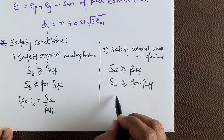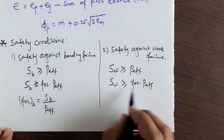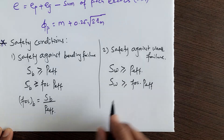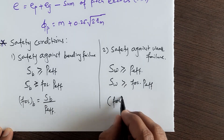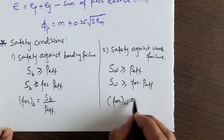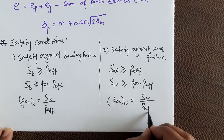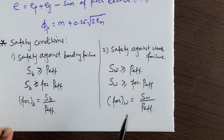If this condition is satisfied, your gear pair is safe; otherwise it is unsafe and you must modify the design. The factor of safety against wear is found as SW divided by P effective. These are the safety conditions to consider at the end of the gear pair design.